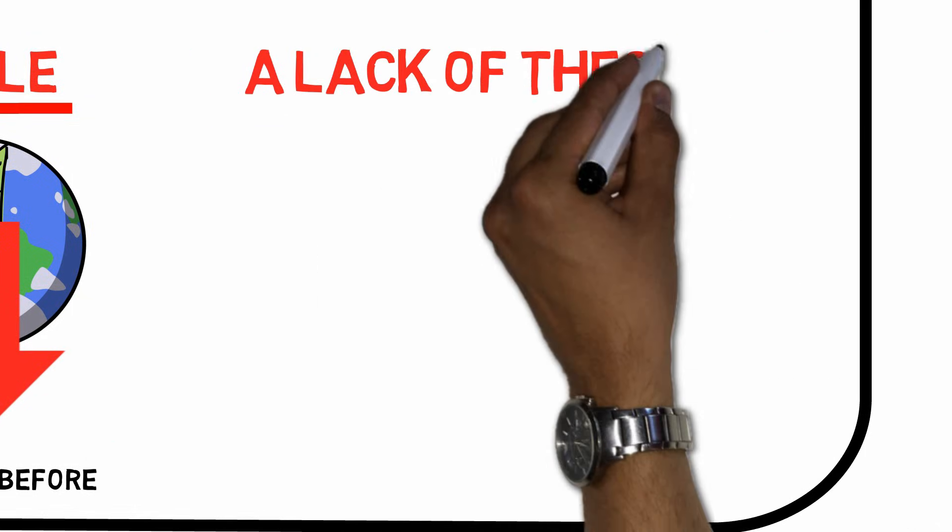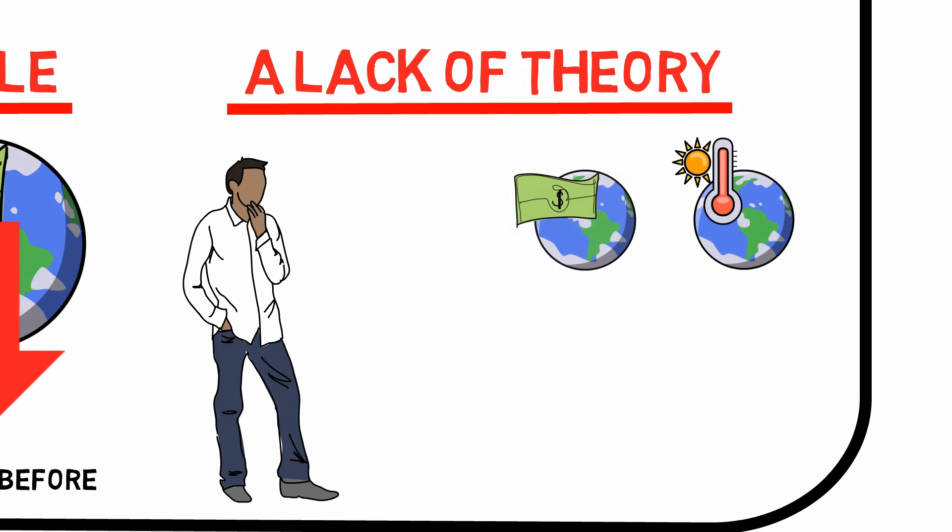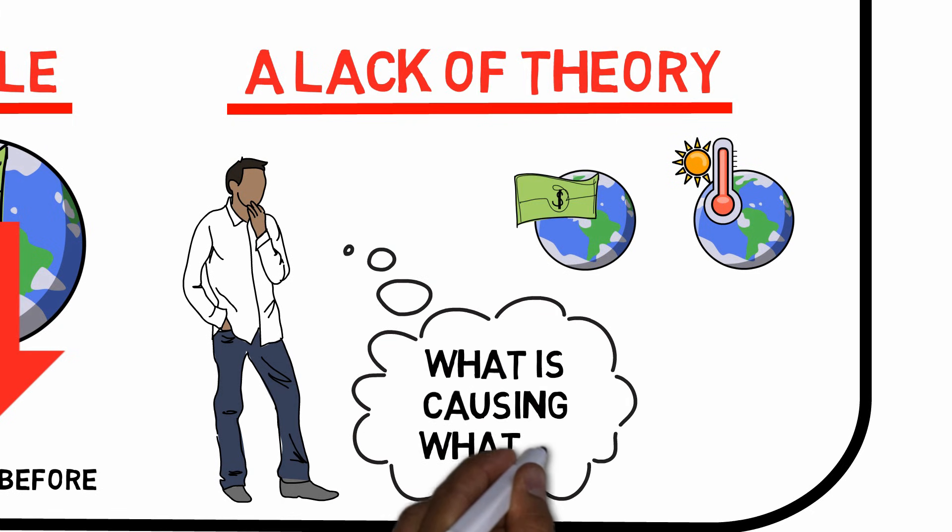A lack of theory. Simply put, we just don't know enough about many of these systems. The economy, just like the climate, are complex beasts, and although we have some heuristics, or rules of thumb, that we can conform to, it's not always enough to make accurate predictions.